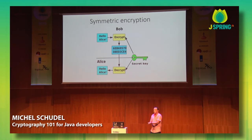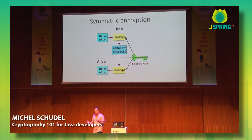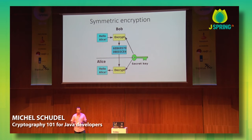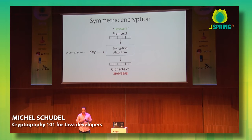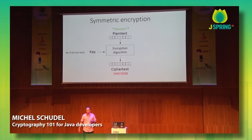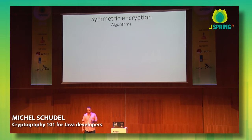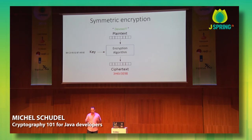Now on to symmetric encryption. Symmetric encryption means having one shared key between, for example, Bob and Alice. Bob can encrypt a message with this key and Alice can decrypt it with the same key. For example, I have a plain string 'Devoxx' — I put it through an encryption algorithm and out comes the ciphertext. The key is just a sequence of bytes. You can generate a key in Java and put it through the cipher algorithm. This is a block cipher, which means it encrypts and decrypts messages in chunks, which is why the block size matters.